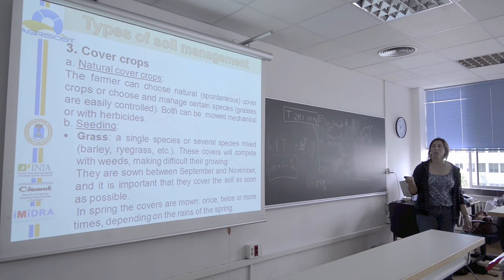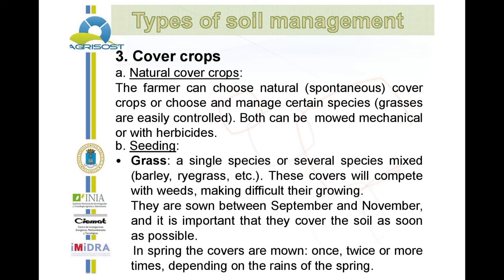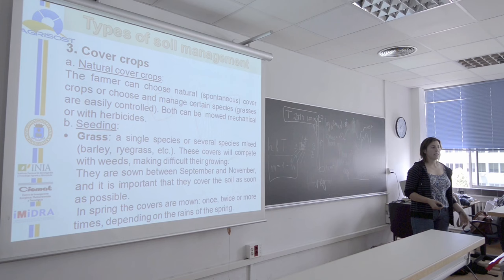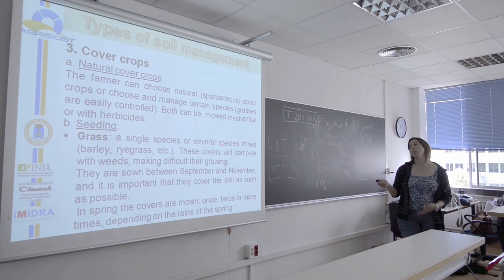The third choice is cover crops — with natural cover crops or seeding. With natural cover crops, the farmer can leave the volunteer vegetation and not direct the vegetation. You don't choose vegetation, or you can use herbicides to select some species, mainly grass. They can then be mowed mechanically or with herbicides. An easy way to have cover crops is seeding — you can choose the species you want, a single species or several.